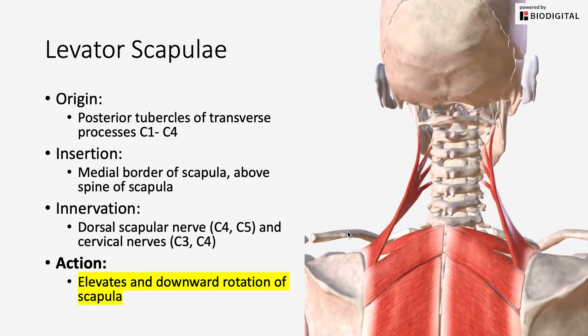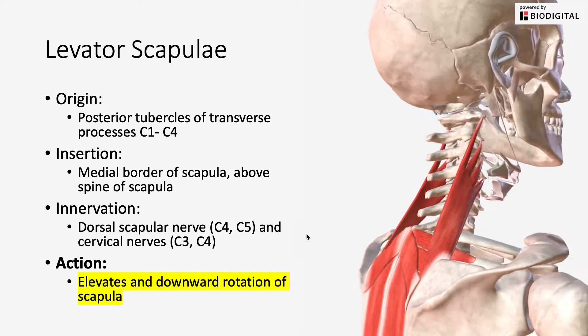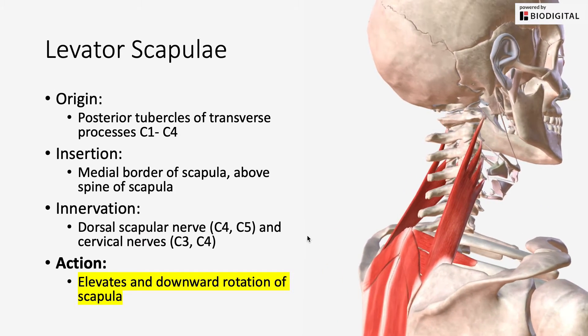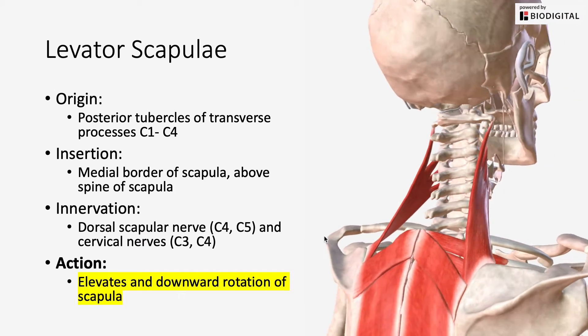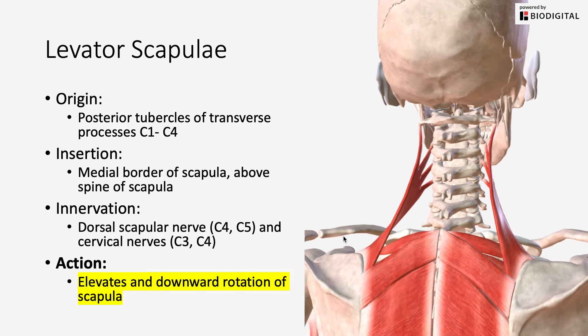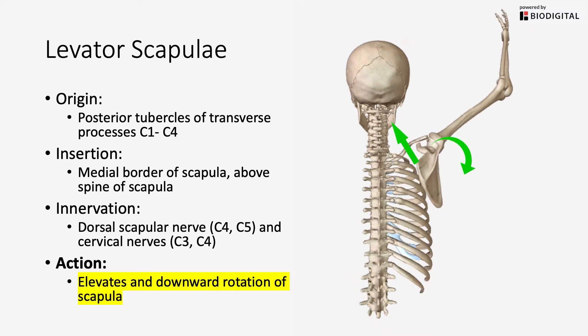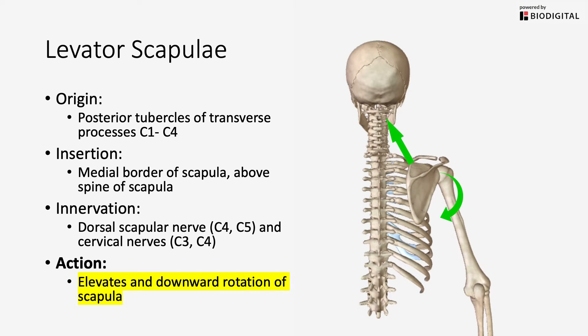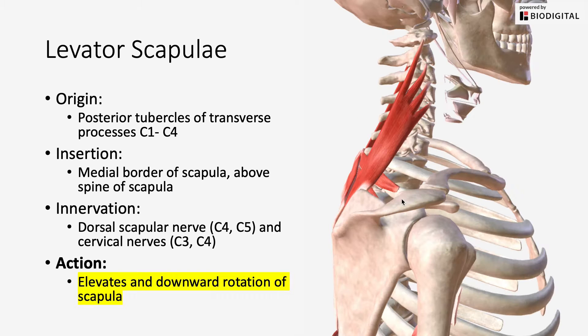The action of the levator scapulae, as you can see here, is that it's going to elevate and downwardly rotate your scapula. Downward rotation is when the glenoid starts to point down and you're rotating your scapula so that the inferior border is moving more medially and the glenoid is pointing down.